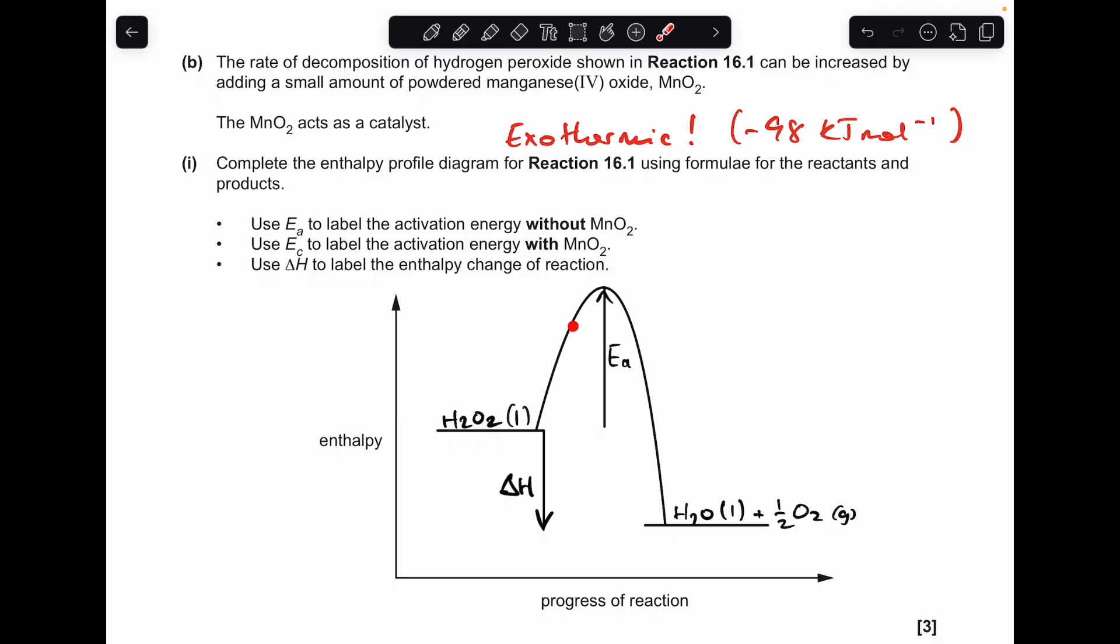So the activation energy without the catalyst, I'm representing with this black arrow here, upwards arrow from the enthalpy of the reactant. And the ΔH is this downwards arrow here, going from reactants to products.